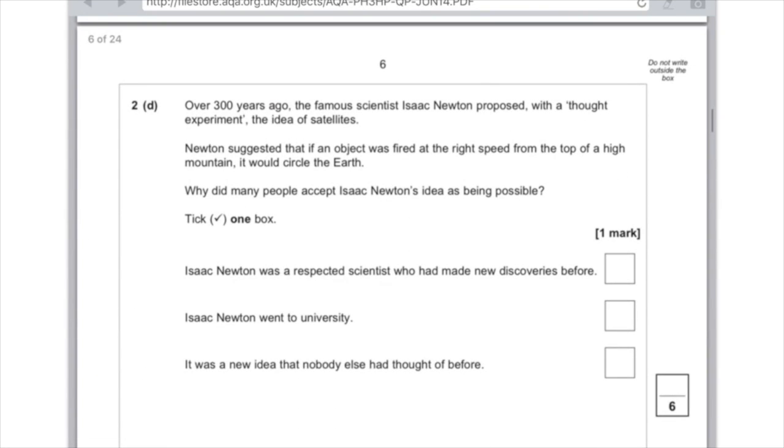2d. Over 300 years ago, the famous scientist Isaac Newton proposed with a thought experiment the idea of satellites. Newton suggested that if an object was fired at the right speed from the top of a high mountain, it would circle the Earth. Why did many people accept Isaac Newton's idea as being possible? Firstly, Isaac Newton was a respected scientist who had made new discoveries before. Yeah, that's sounding quite likely to be, but I'm just going to double-check with the other answers. Isaac Newton went to university. Yeah, that's great, but we don't know. It was not saying what he studied there, so that wouldn't be a reason to agree with him. And it was a new idea that nobody else had thought of before. That's not a reason why anyone would accept it. So yeah, you need to put a tick in the first box.